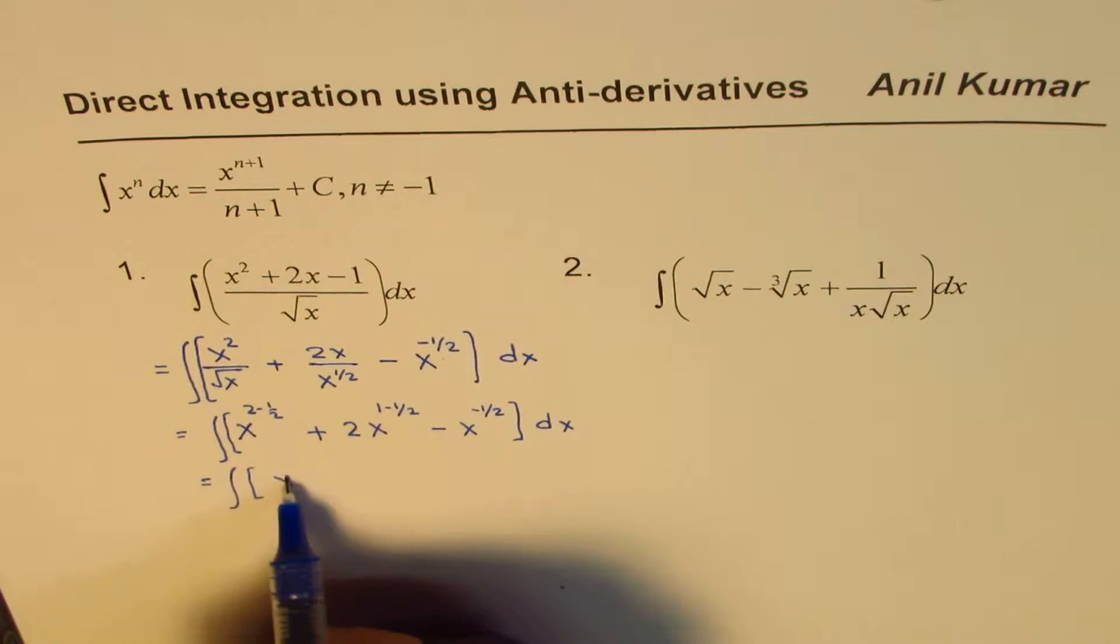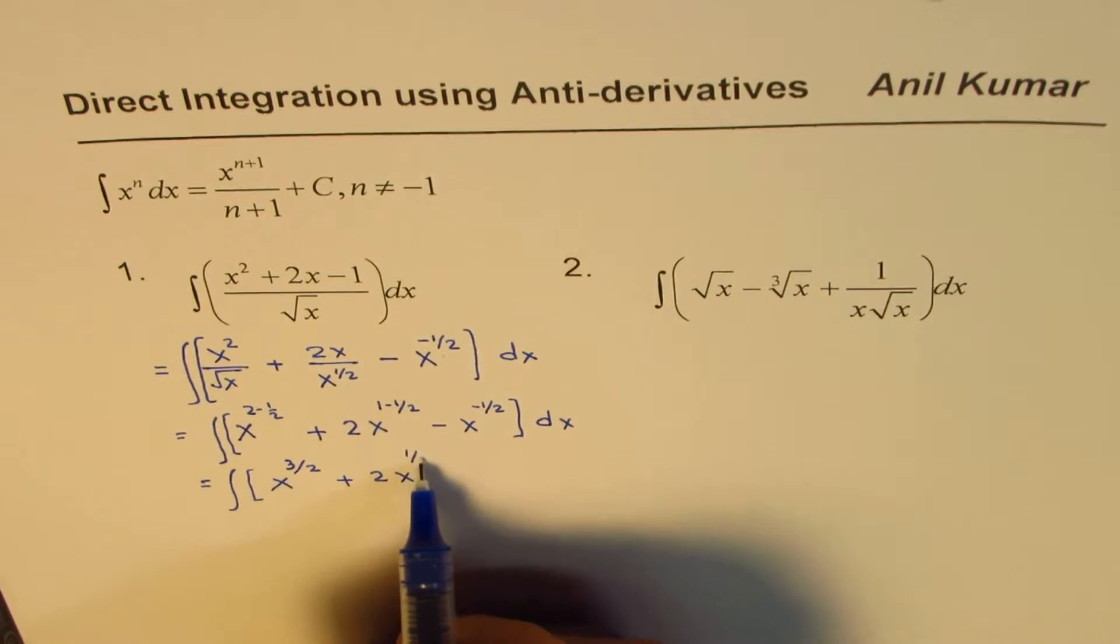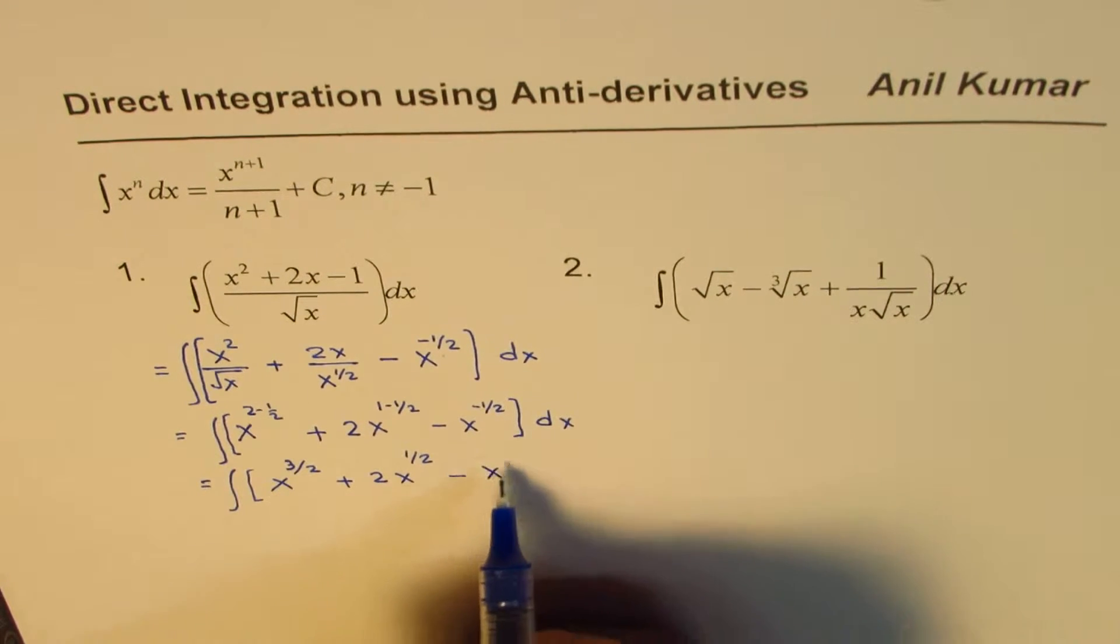Now, so that you get x to the power of 3 by 2, plus 2 times x to the power of half, minus x to the power of minus half, d of x.